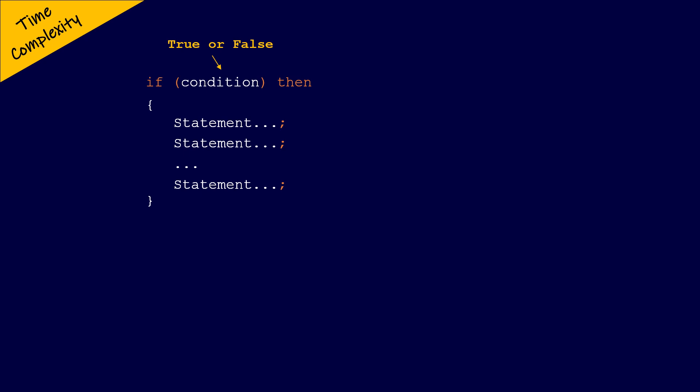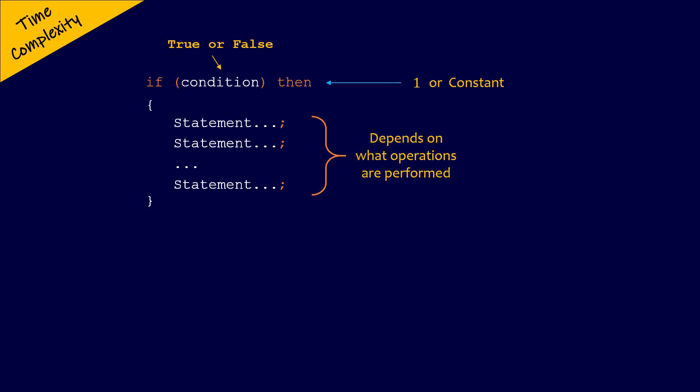The condition only evaluates to either true or false. Therefore, the time complexity of the if statement is one or constant. An important point to remember is that here we are looking at the time complexity of the if statement itself, which is one or constant. But remember that the time complexity of the statements inside the if structure depends on what operations are performed by those statements.